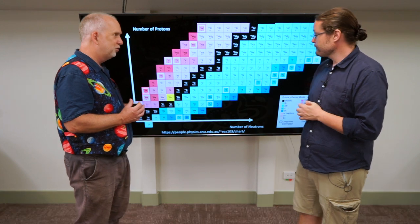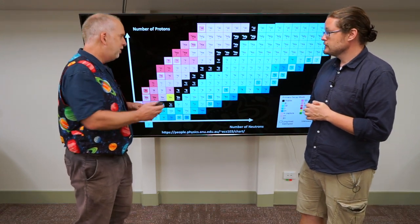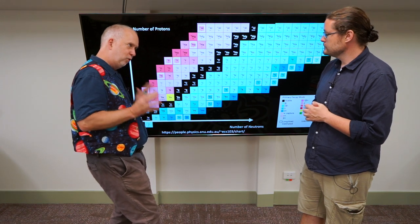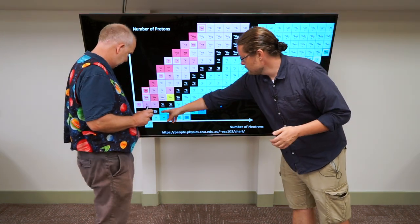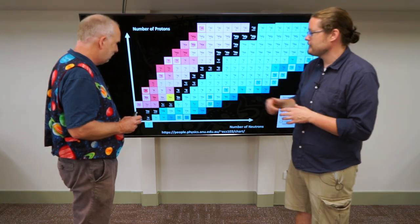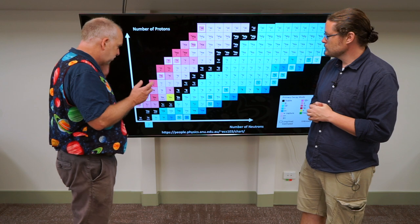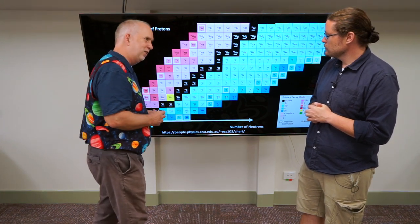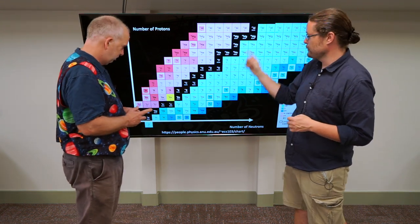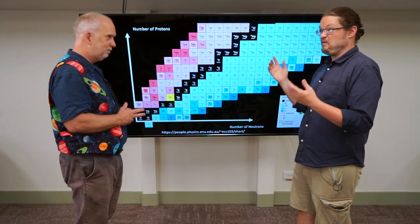And what you can see is the black ones here are the ones that are stable. So these ones will last forever. And they tend to be on a kind of diagonal line here with roughly the same number of neutrons and protons. The different colors indicate ones that are radioactive and unstable. So pretty much most of these are radioactive and unstable. It's only these black ones that are fine.